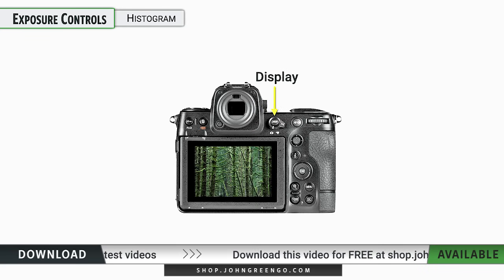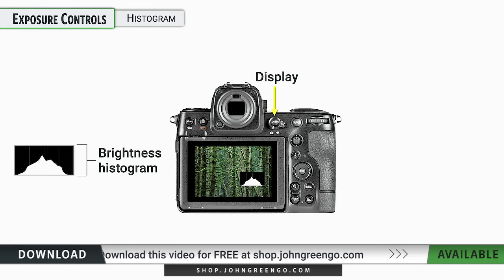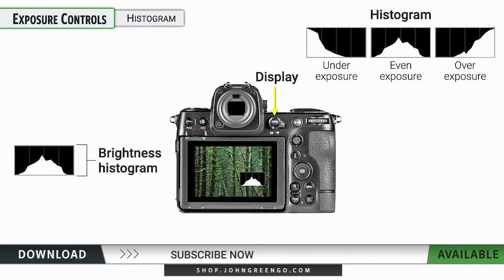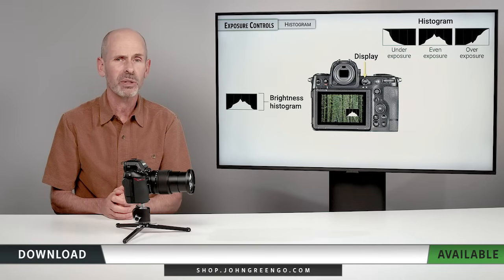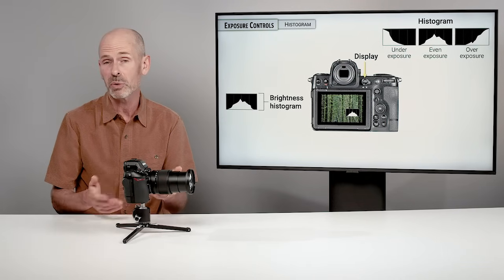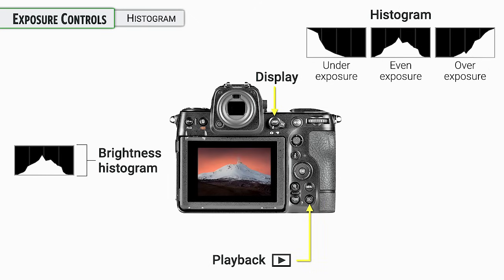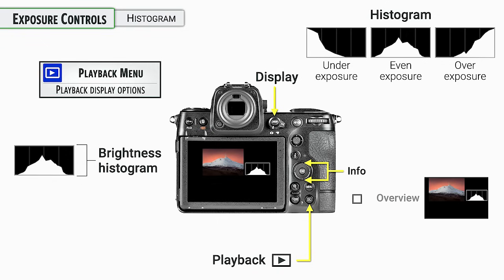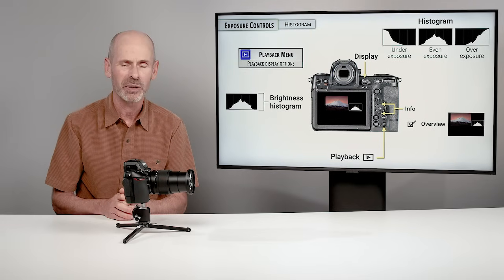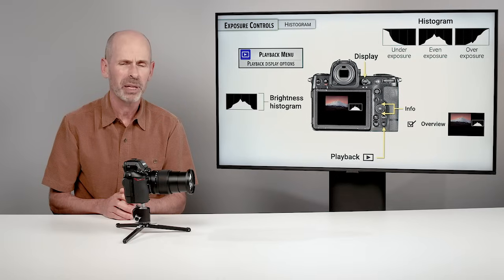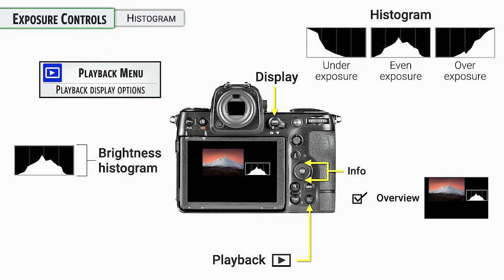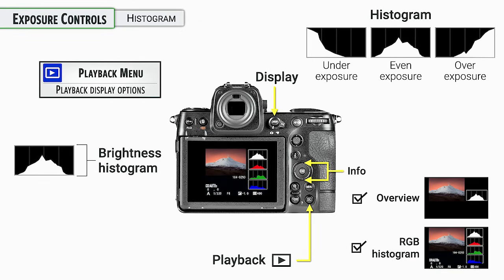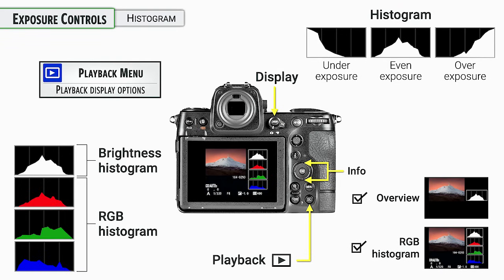One of the best ways to determine correct exposure is the histogram — viewable by pressing the display button. It's a graph showing whether you're overexposed or underexposed. You can also see it during image playback by pressing the info button and cycling through information screens. However, Nikon has this turned off by default, so you need to enable it.